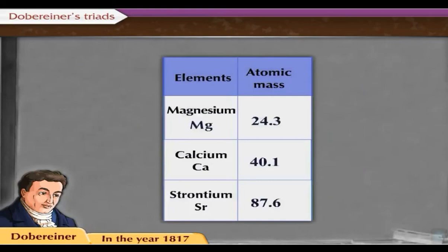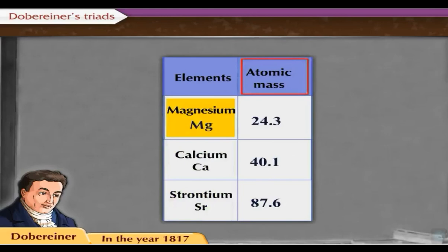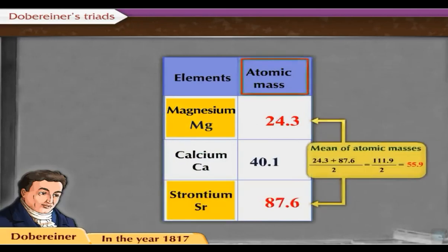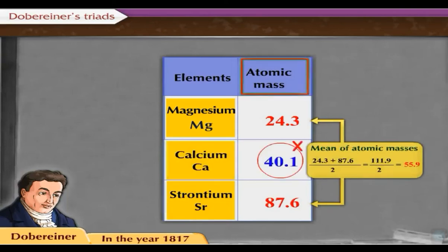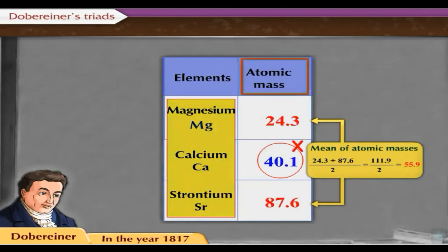Now let us consider the atomic masses of magnesium, calcium, and strontium and find whether they form a triad. The atomic mass of magnesium is 24.3 and that of strontium is 87.6. Their mean value is 55.9. This value is not equal to the atomic mass of calcium, which is 40. This shows that magnesium, calcium, and strontium do not form a Dobereiner's triad.